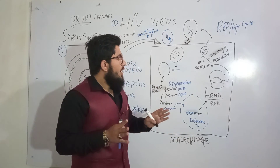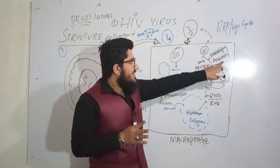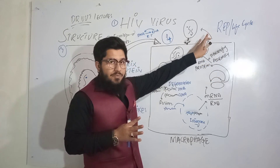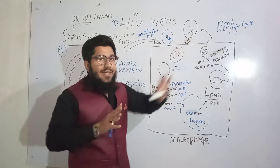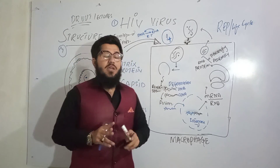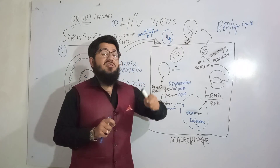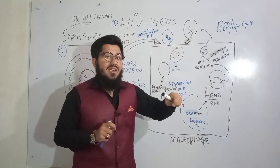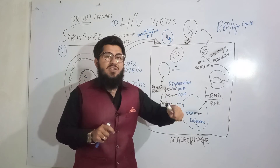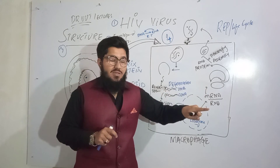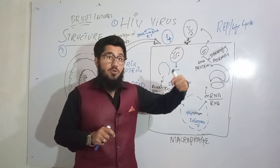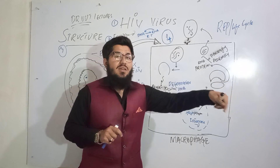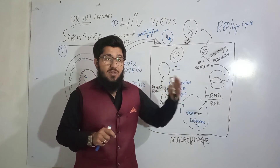First the RNA is enclosed, then the capsid, then the matrix protein surrounds it, and finally as they are released, they take their envelope from the host cell — the macrophage or immune cell. So the process is: assembling, then packaging, then releasing. Once released, the virus is free to find another cell, infect it, and the cycle continues.